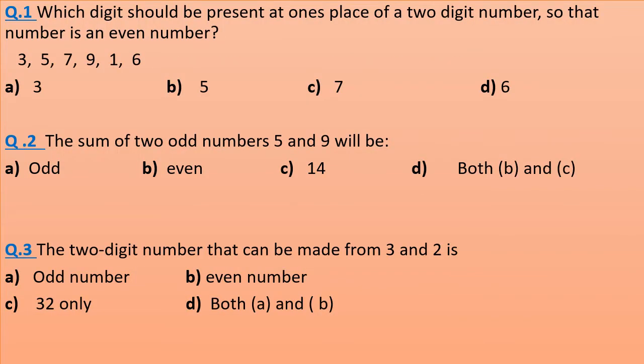Question 1: Which digit should be present at ones place of a two-digit number so that the number is an even number? The digits are 3, 5, 7, 9, 1, 6. So which digit should be placed at ones place in a two-digit number so that the number is an even number?